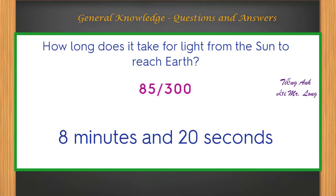How long does it take for light from the Sun to reach Earth? 8 minutes and 20 seconds.